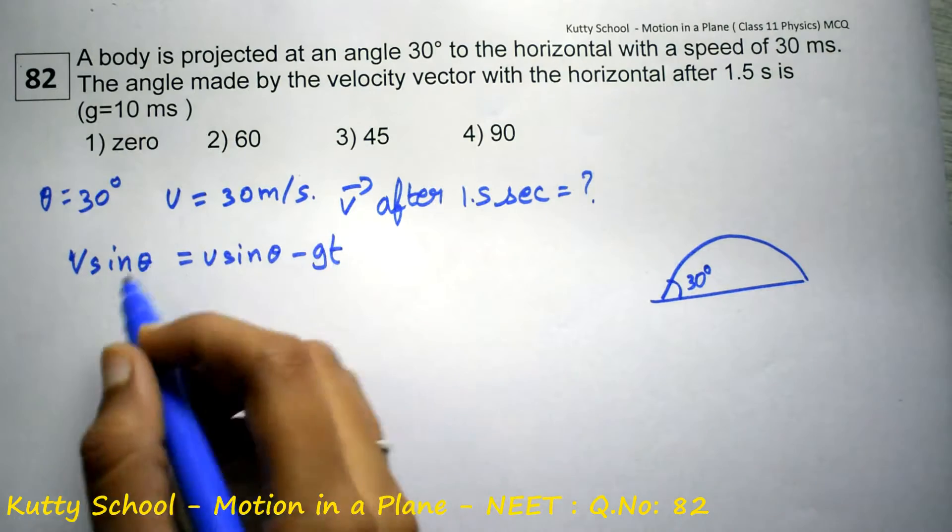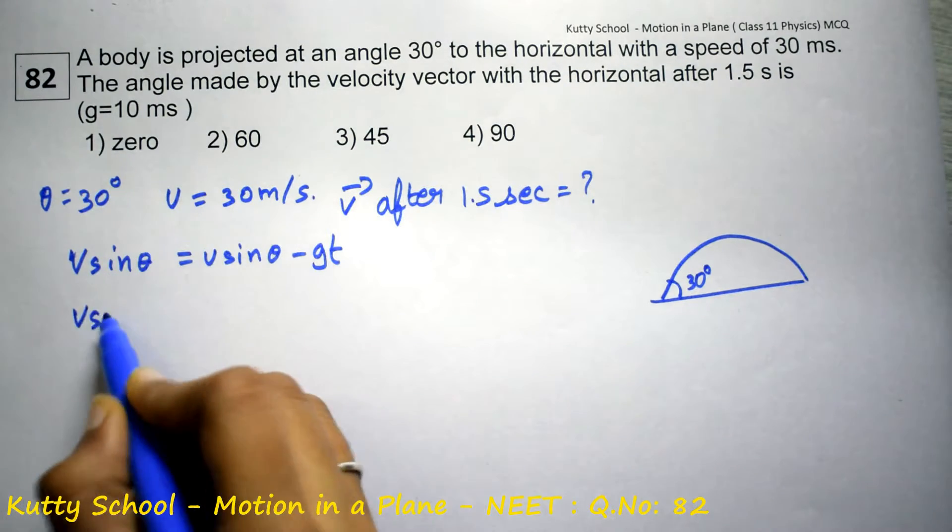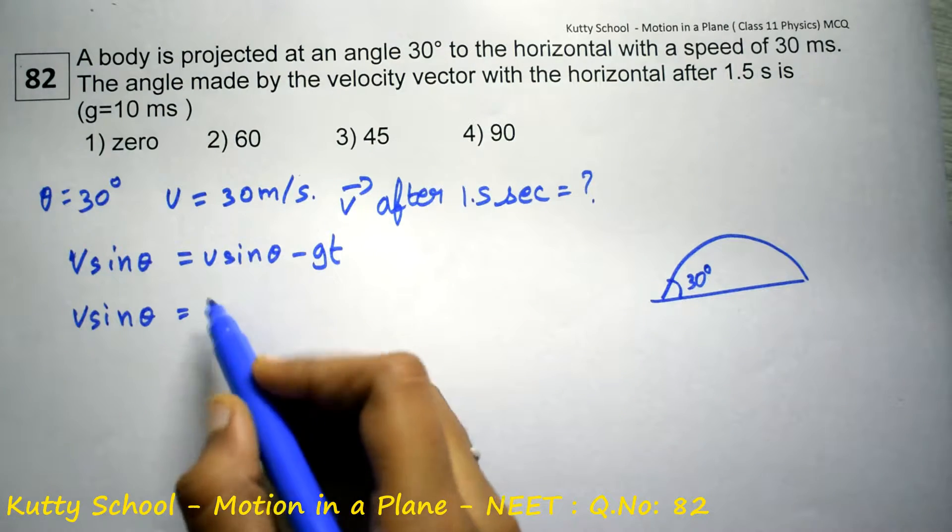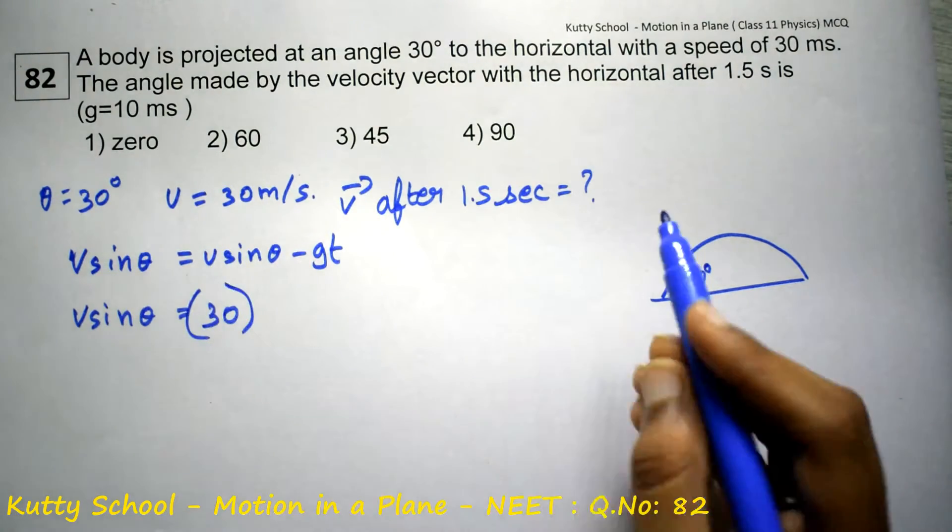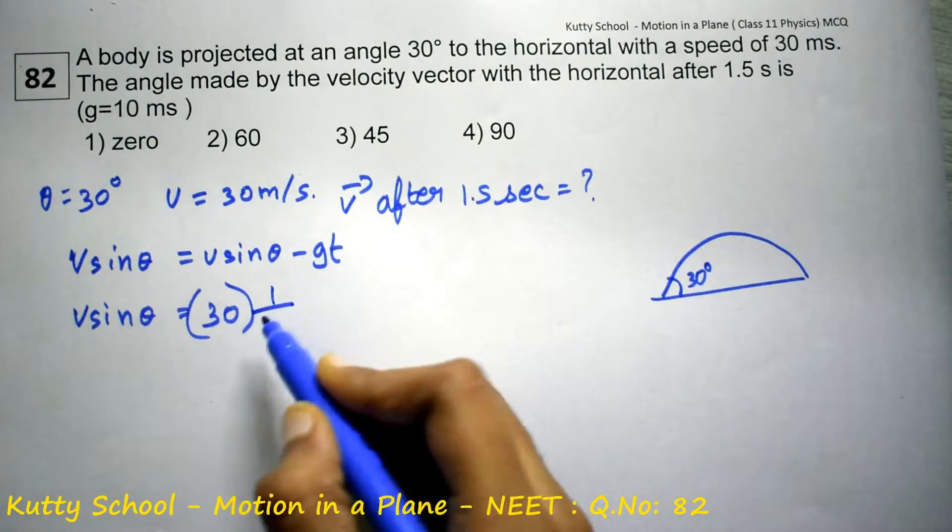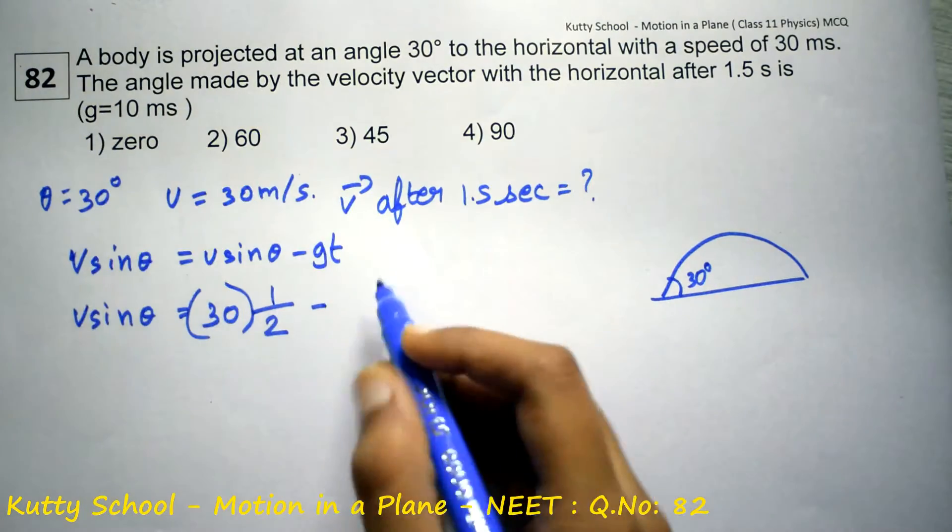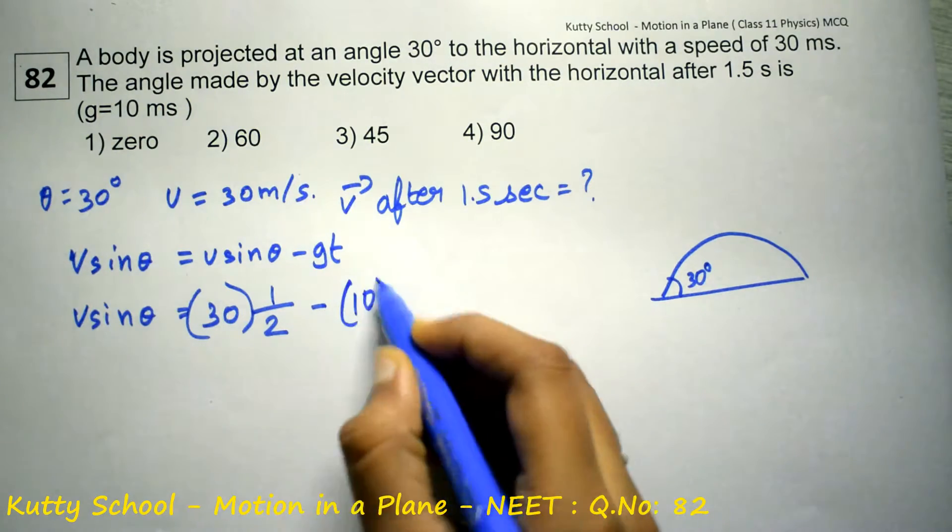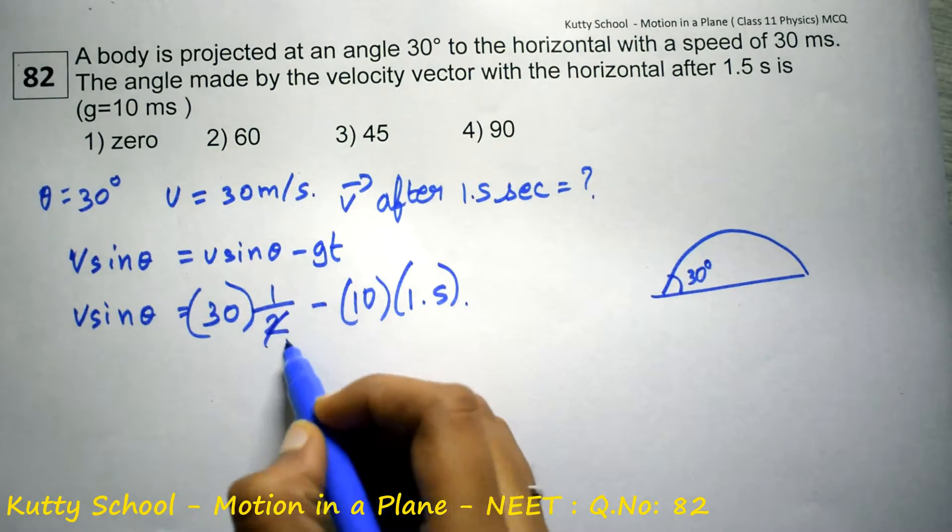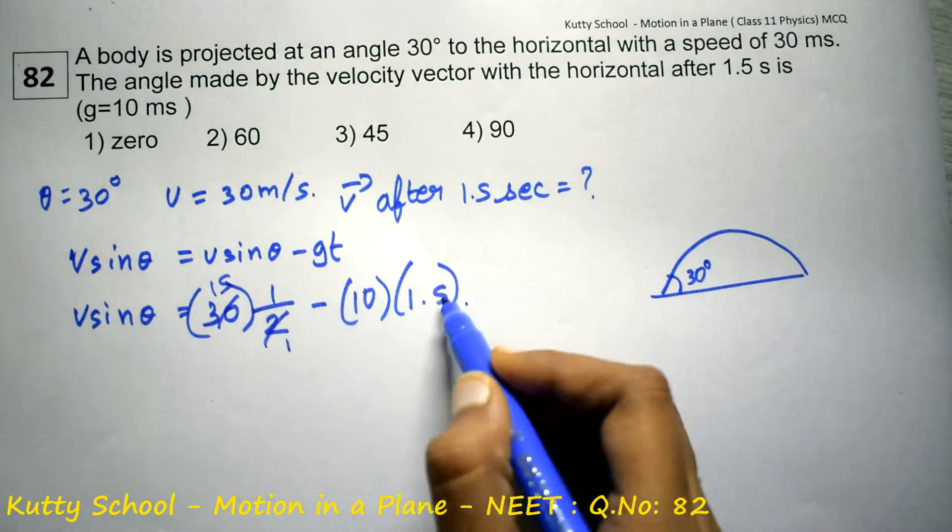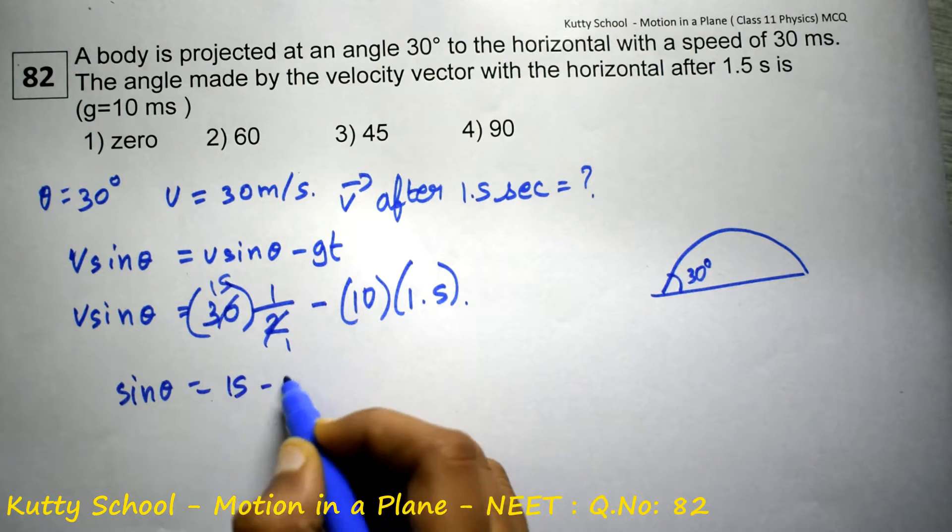So v sin theta is equal to u sin theta. So u under 30, sin theta, sin theta is 1 by 2 minus gravitation number 10. So 10 into time 1.5, so 15. So sin theta is equal to 15 minus 15.